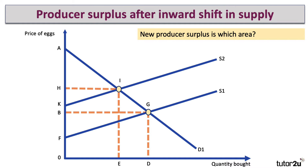So there's a change in price and quantity. What is the new area of producer surplus? Maybe press pause for a few seconds and think about which labeled area shows the new producer surplus. Originally, producer surplus was BGF. The new area is HIK. Yes, they're charging a higher price, but their costs have gone up. So that triangle above the supply curve and below the price has shrunk from BGF to HIK — a fall in producer surplus.